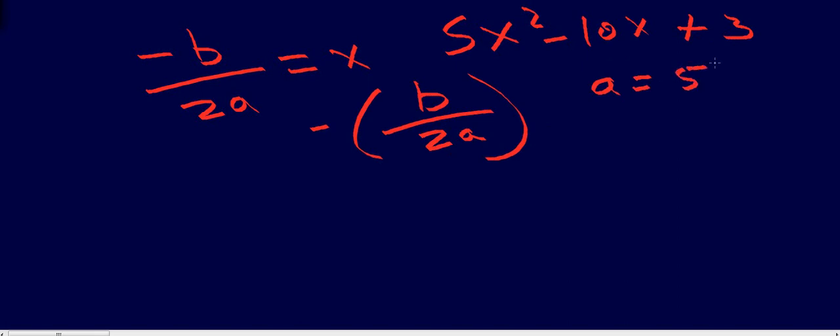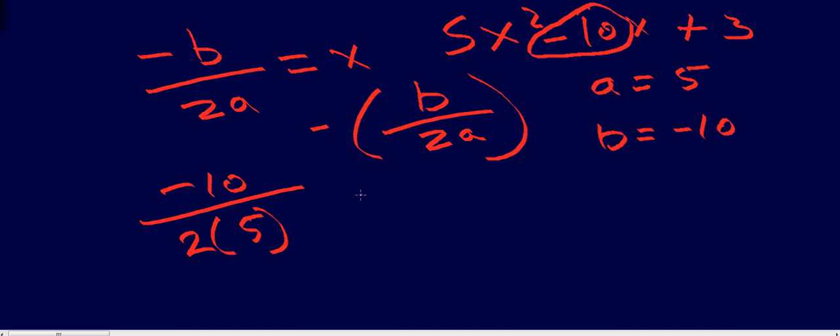So a equals 5, b equals negative 10. You take that b. Don't forget that minus sign. That minus sign means it's a negative 10. So you've got negative 10 over 2 times 5, which would be negative 10 over 10, which would be negative 1. Put that back in my parentheses, put my negative sign out so I get a 1. So x equals 1.